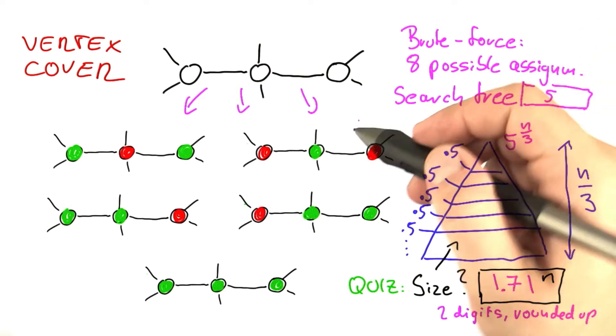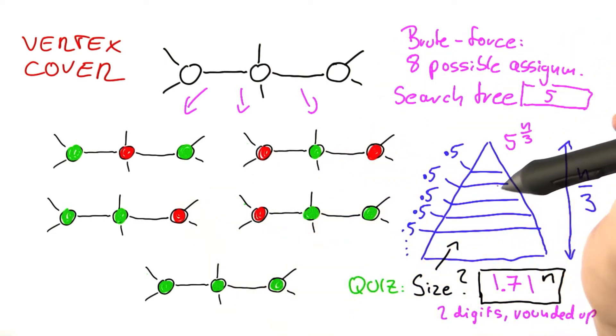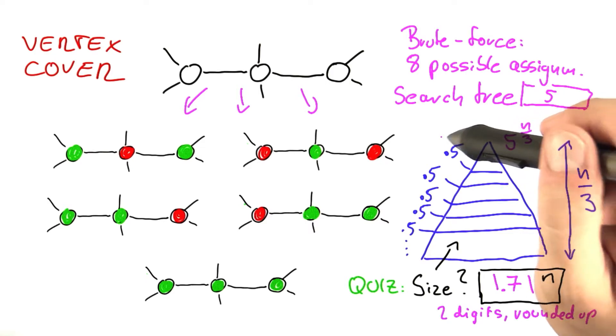The first one is that the preprocessing rule that we used was actually a rather trivial one. It just concerned those vertices that have a single neighbor.